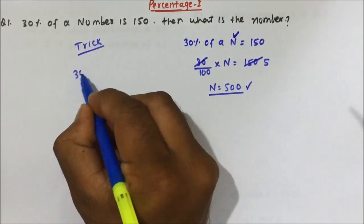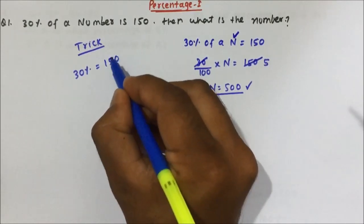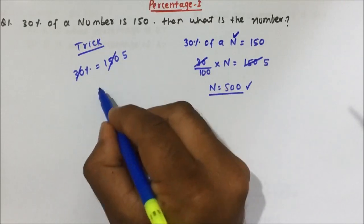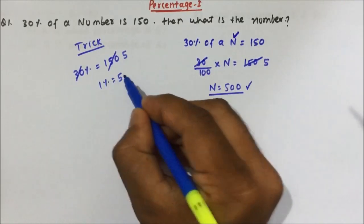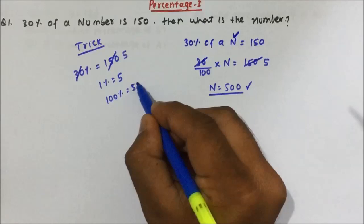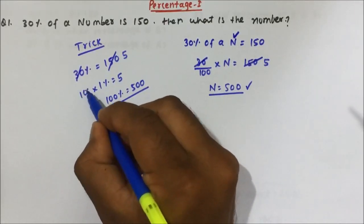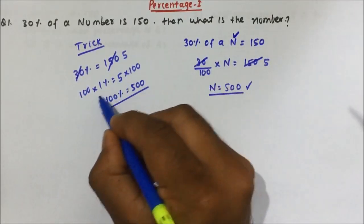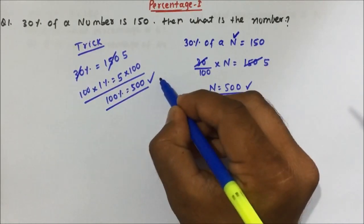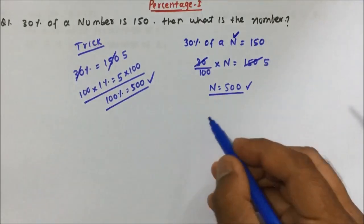Now let's understand the trick. 30 percent of a number equals 150. Divide 150 by 30 — that gives 5, so 1 percent equals 5. Now multiply both sides by 100: 100 percent equals 500. That is our answer. The trick is simple: divide the given value by the percentage to get 1%, then multiply by 100.